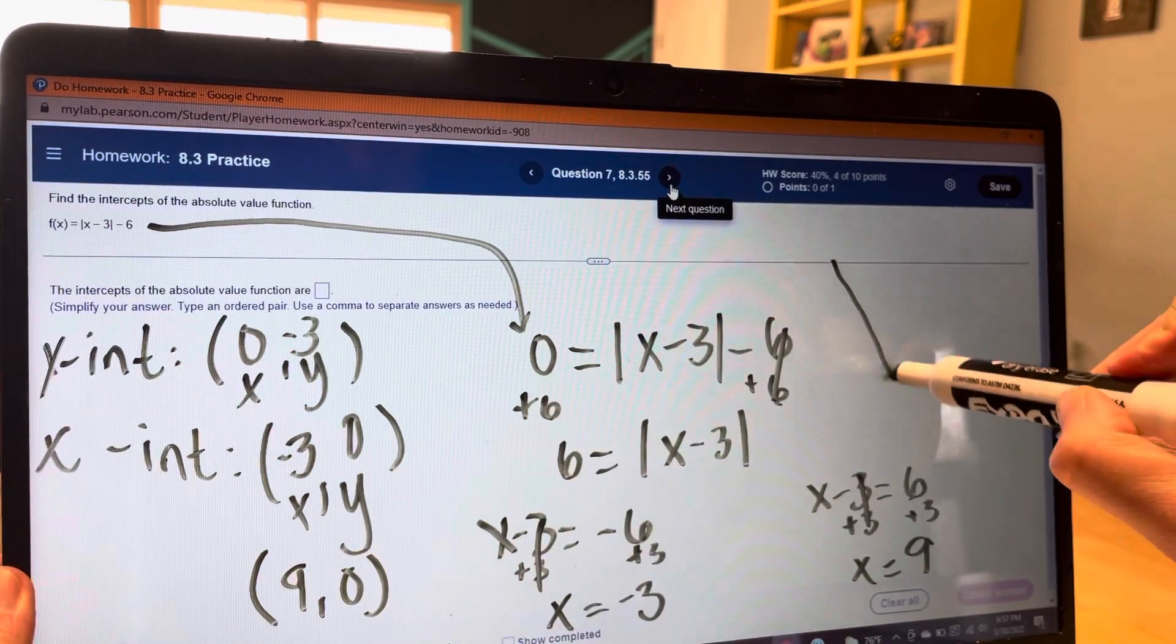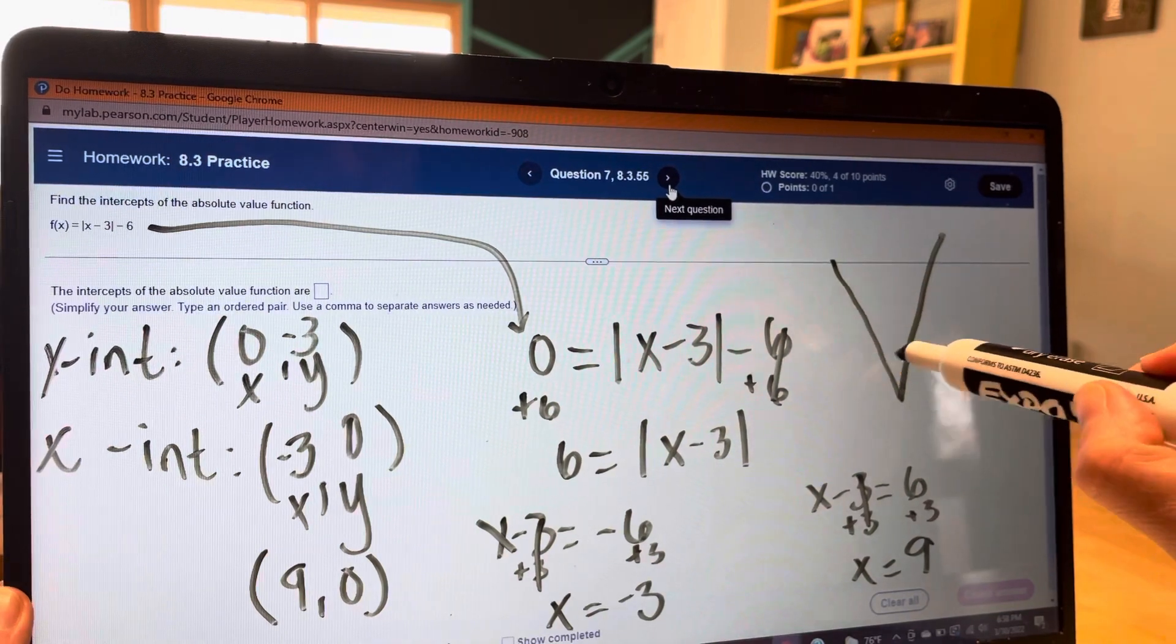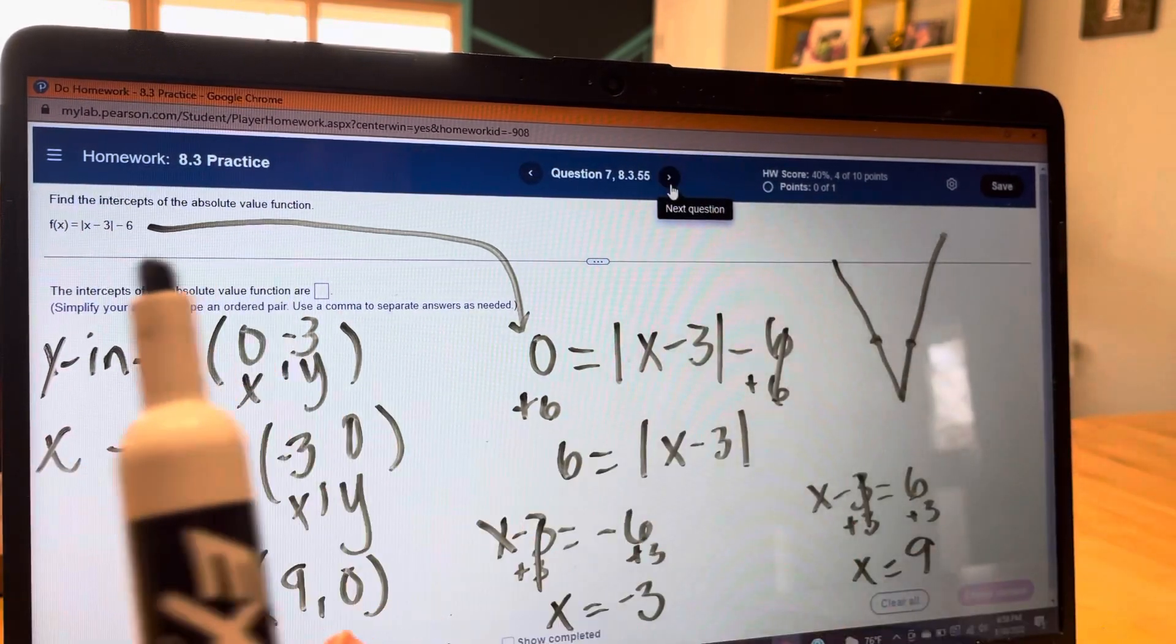Remember, an absolute value function looks like this. So that means it's crossing the x-axis twice.